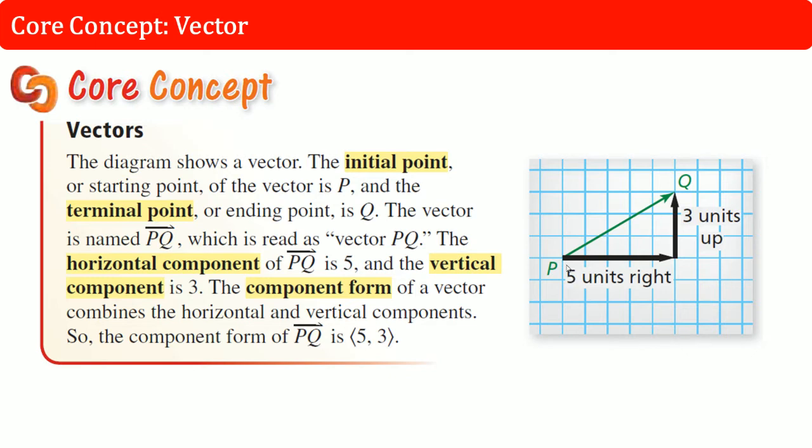In this case, you can count the horizontal component as five because that is how much you're traveling on the X axis. One, two, three, four, five. Then to go up to Q, you also have to go up three. One, two, three. That's why they say the component form of this is bracket five comma three.